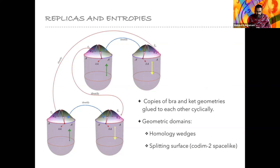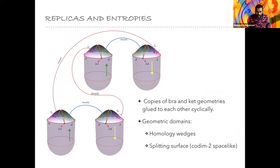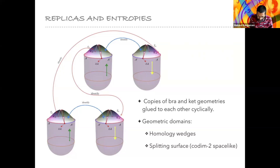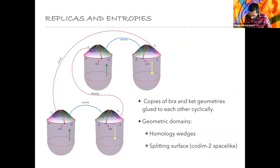To compute replica observables, we glue bra and ket geometries to each other cyclically. I want to highlight a couple of geometric domains in such replica computations. First, the splitting surface, which is bulk codimension-two and is the bulk extension of the entangling surface. In addition, I'm defining something called the homology wedge, which is the past domain of dependence of the homology region — it's the analog of the entanglement wedge for these Rényi-type geometries. If we're computing the nth spectral moment of a reduced density matrix, we have n bras and n kets with various gluings, and each bra and ket has a copy of the homology wedge for the region and the complement.